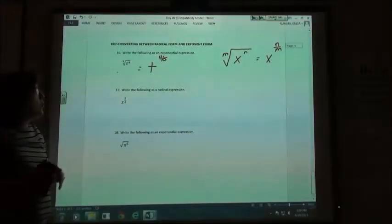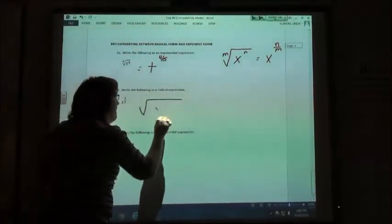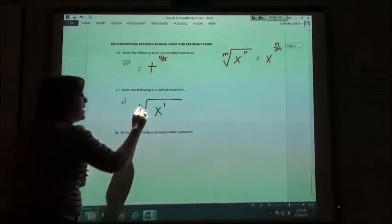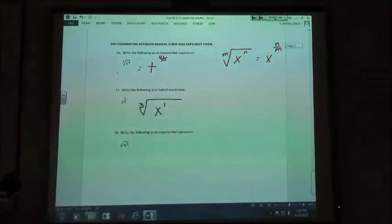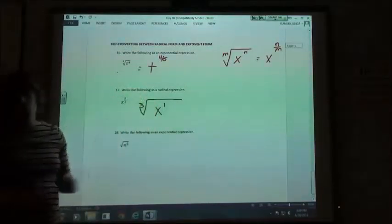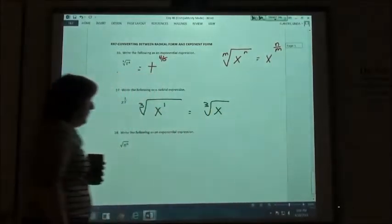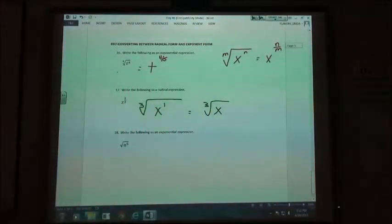x to the 1 third power. So the 1 goes with my x. The 3 is the index to my radical. Now, of course, we know that we don't really need x to the first power. So we're just going to say it's the cube root of x and that would be your answer in the best form.